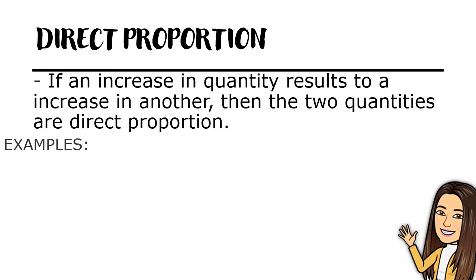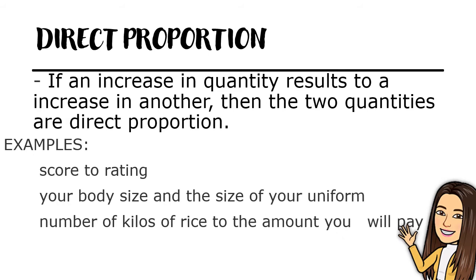Examples: score to rating, your body size and the size of your uniform, and number of kilos of rice to the amount you will pay.